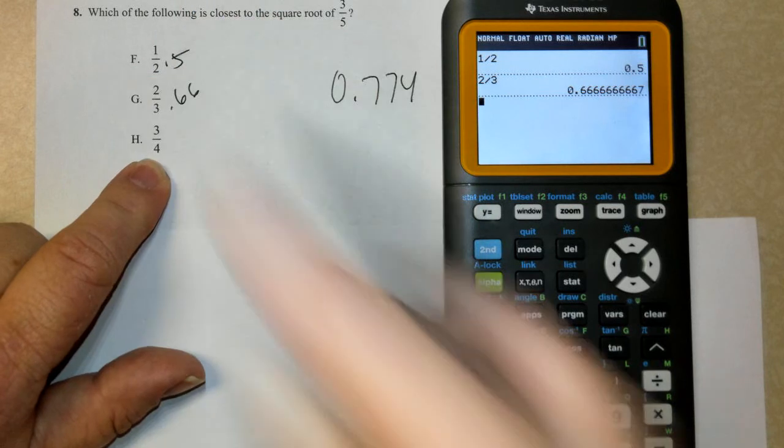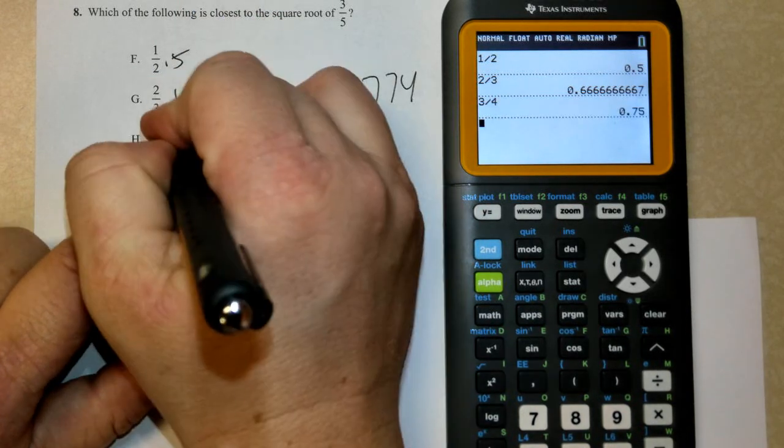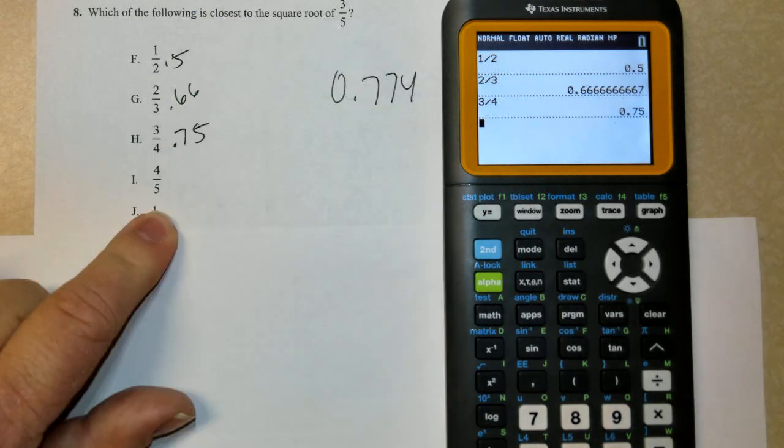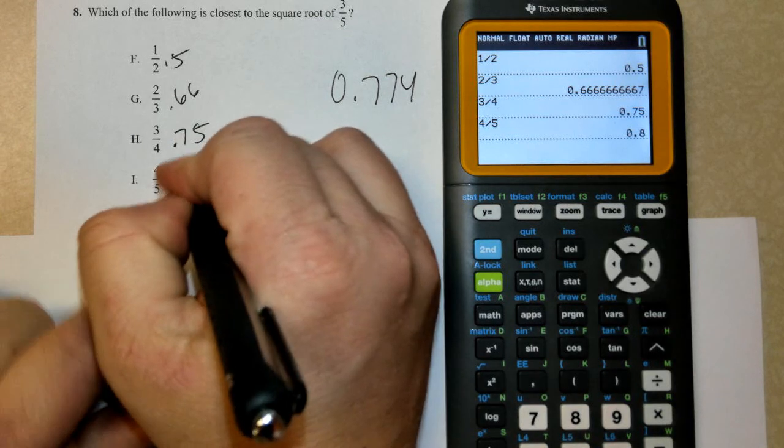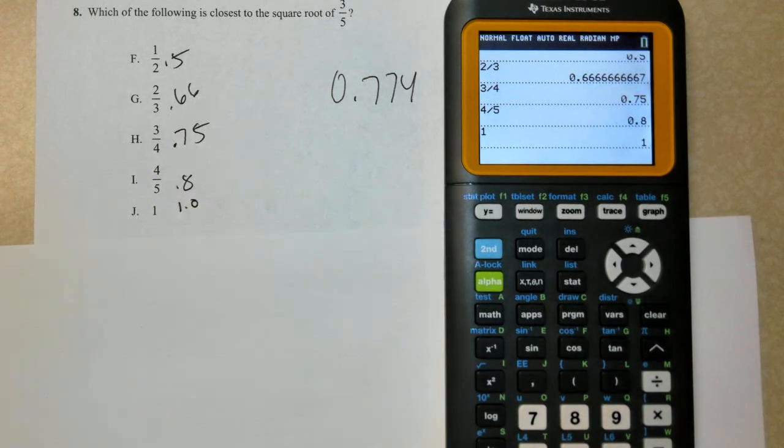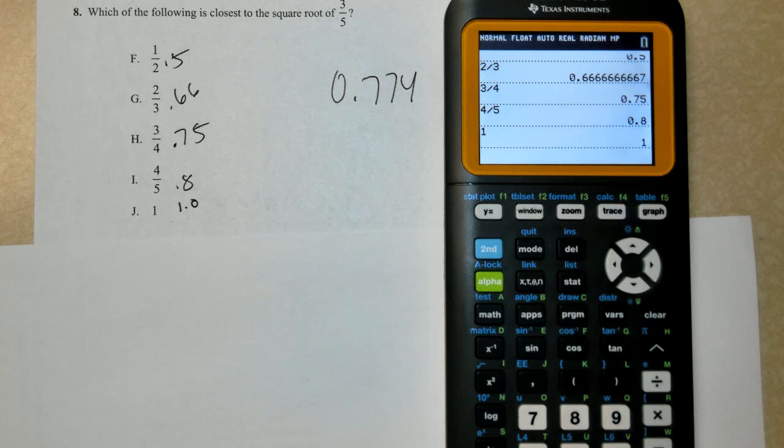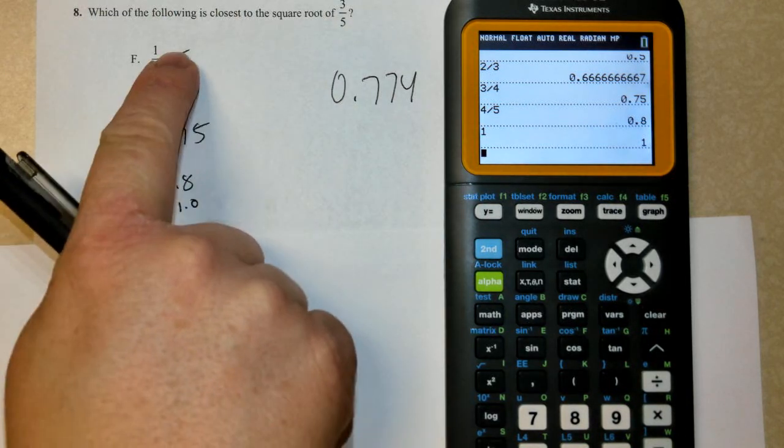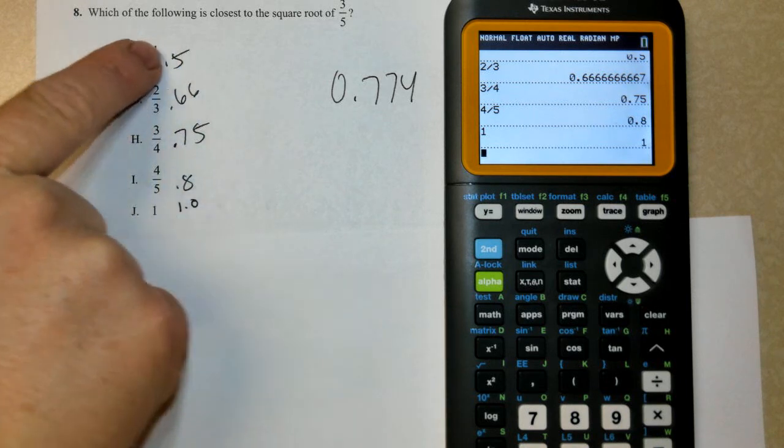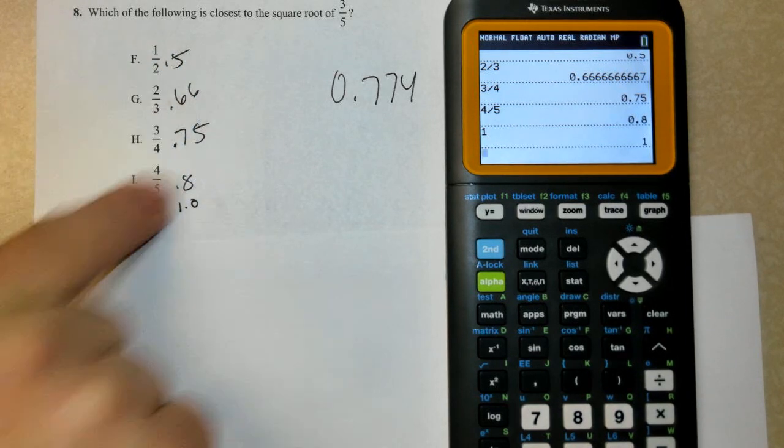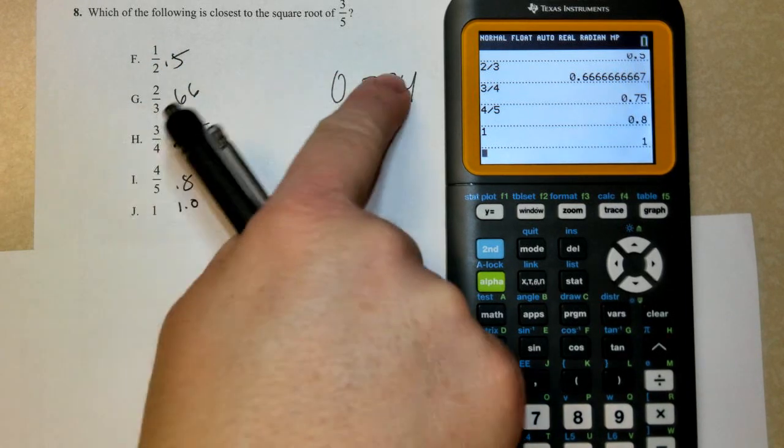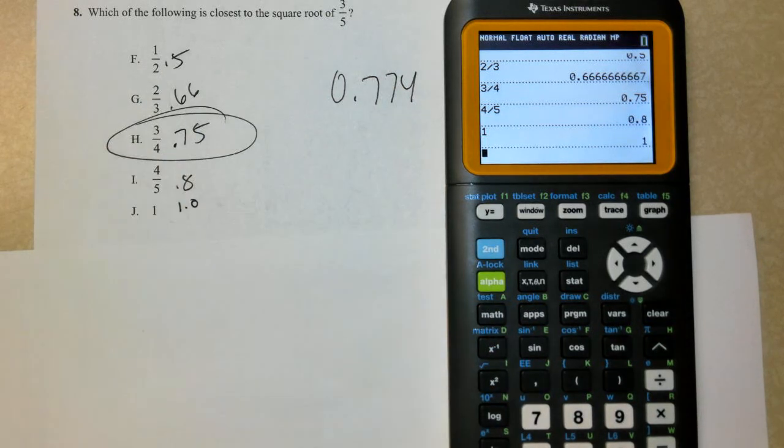4 divided by 5. 0.8. And you're going to see with ACT that when they give you a list of numbers, they're going to be either going up or going down consistently. They're going to be going up or going down. It's not going to be at random like 0.5, then 0.8, then 1.0, then 0.6. So which one is closest to this? Correct answer is H.